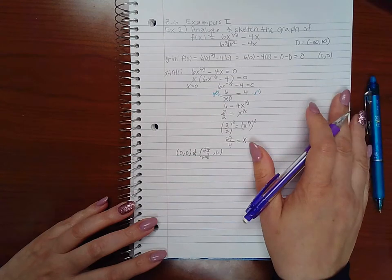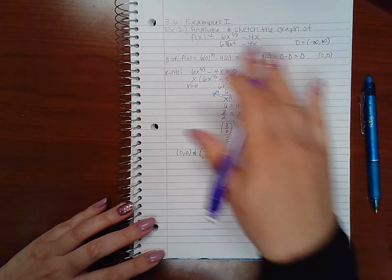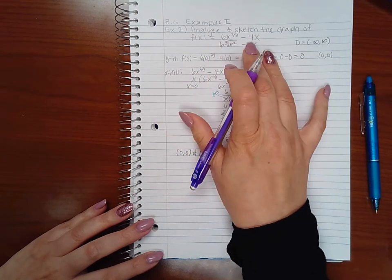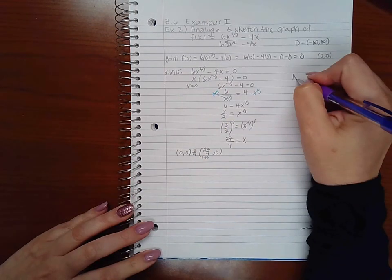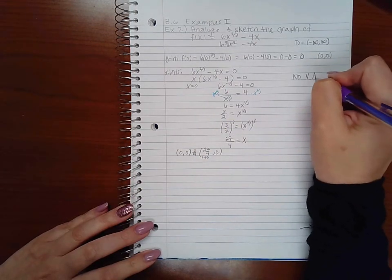So then now I need to talk about vertical asymptotes. Well, there's no denominator in my original function, so I don't need to worry about vertical asymptotes. There's no vertical asymptotes.